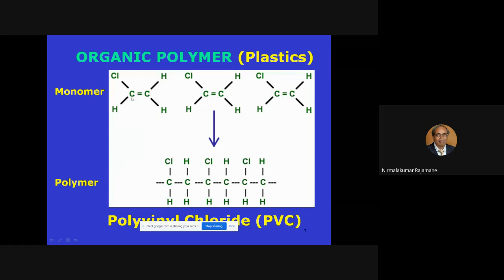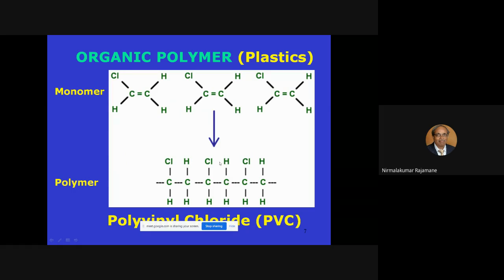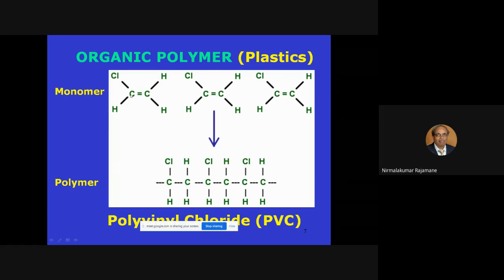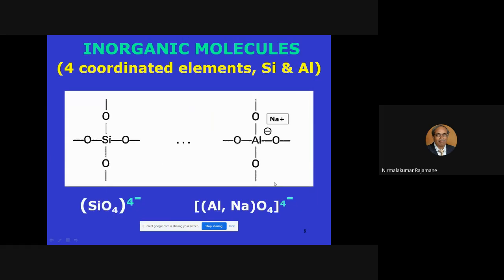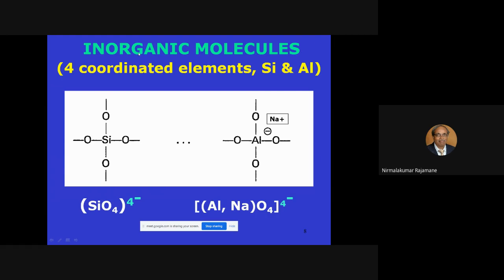In organic polymers, carbon is the continuing chain — from the carbon chain you can see many carbons joined by hydrogen, chlorine, oxygen, and so on. A liquid chemical called a monomer solidifies and becomes a polymer by polymerization; many carbons come together to form a polymer. This is what we call plastic — a continuous carbon chain in the molecule.